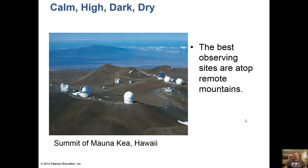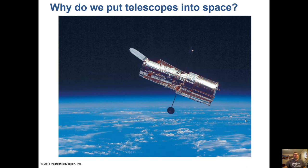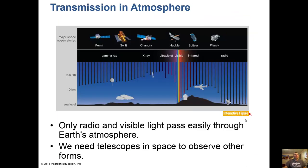Here is Mauna Kea in Hawaii — a calm, high, dark, dry site. The best observing sites are atop remote mountains. But why do we put telescopes in space, like the Hubble Space Telescope — named after Edwin Hubble from Marshfield? Only radio and visible light pass easily through our atmosphere, so we need telescopes in space to observe other wavelengths. Hubble was put up around 1990 by the Space Shuttle, and we'll soon have a replacement called the James Webb Space Telescope.